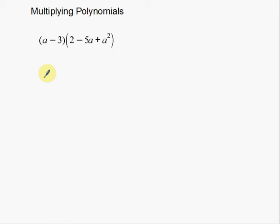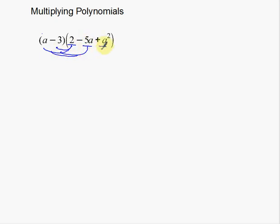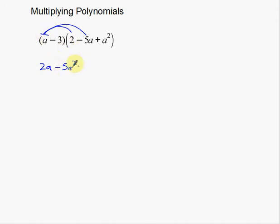What I suggest here is that you always take the smaller one times the larger one — meaning I'm going to take these two terms times the three terms over here. I'm going to start with this 'a' here, taking it times everything in the trinomial first. So a times 2 gives 2a, a times negative 5a gives negative 5a squared — notice the variable is increasing. And a times a squared is going to be a to the third.